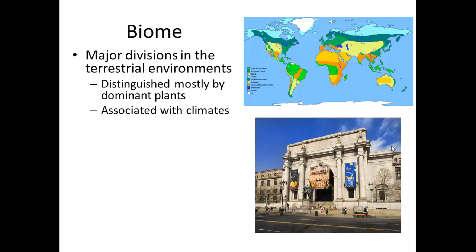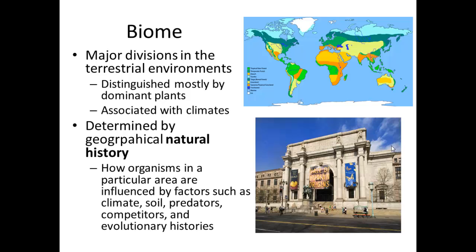You're going to have a rainforest, tropical rainforest, or a deciduous forest, the taiga. Those are all looking at different types of plants, the dominant plant in that area. But not always; some of them are just named like desert, which has its own connotation. These are all associated with specific climates. They are determined by the geographical natural history, and this includes how organisms in a particular area are influenced by things like climate, soil, some biotic factors such as predators and competitors, and then looking at how those things have changed over time. You can look at natural history if you've gone to D.C. at the Natural History Museum, which highlights a lot of plants and animals throughout the world.